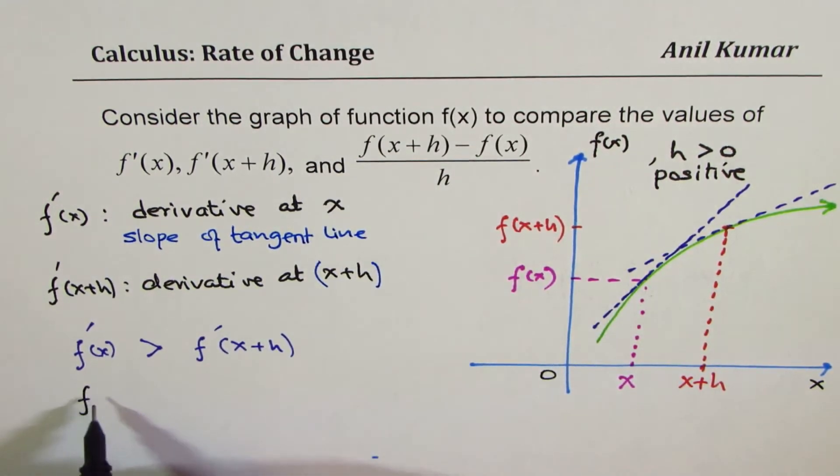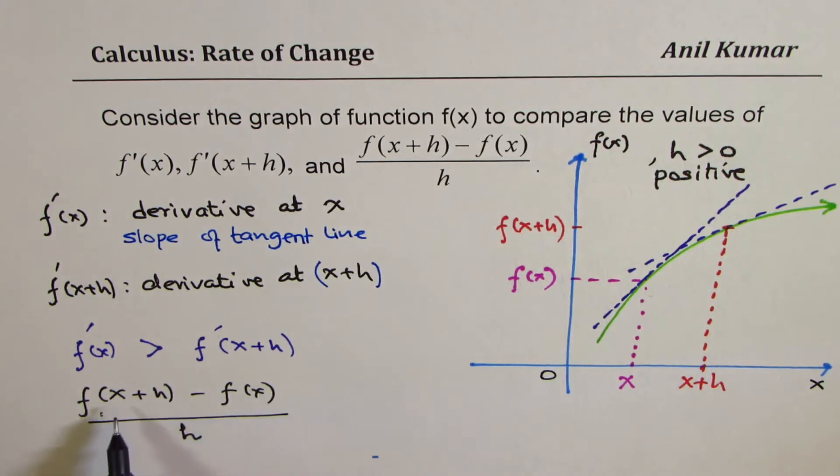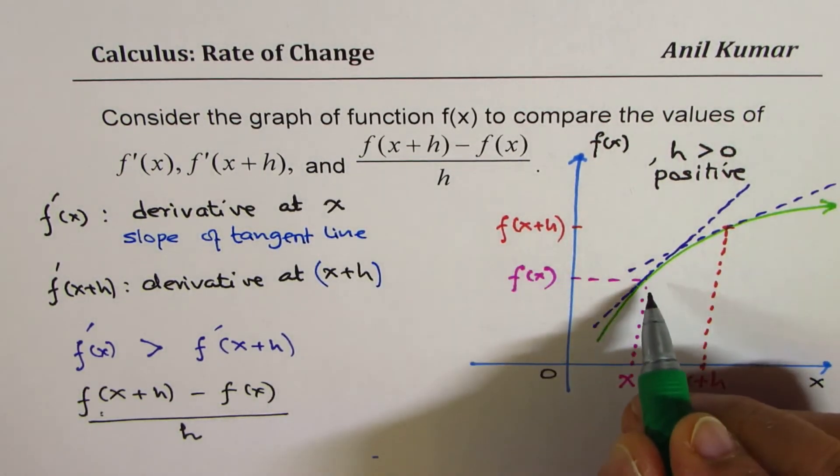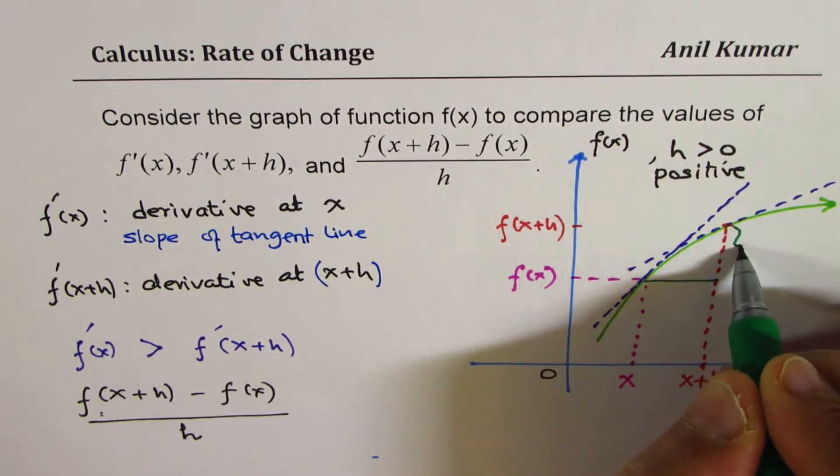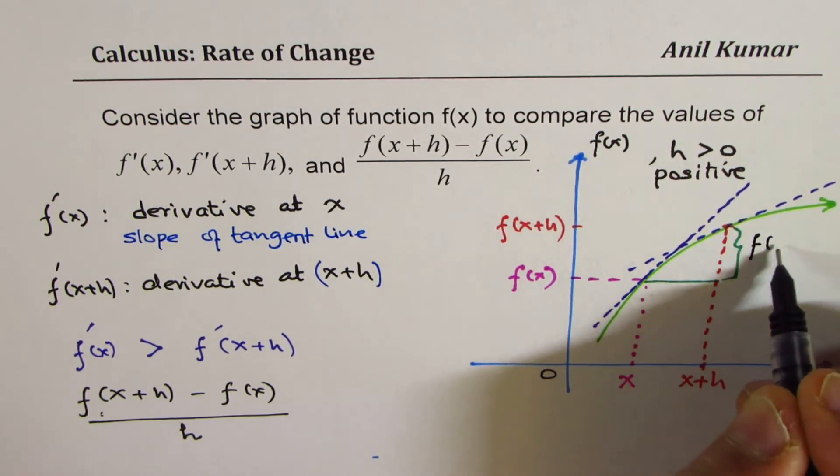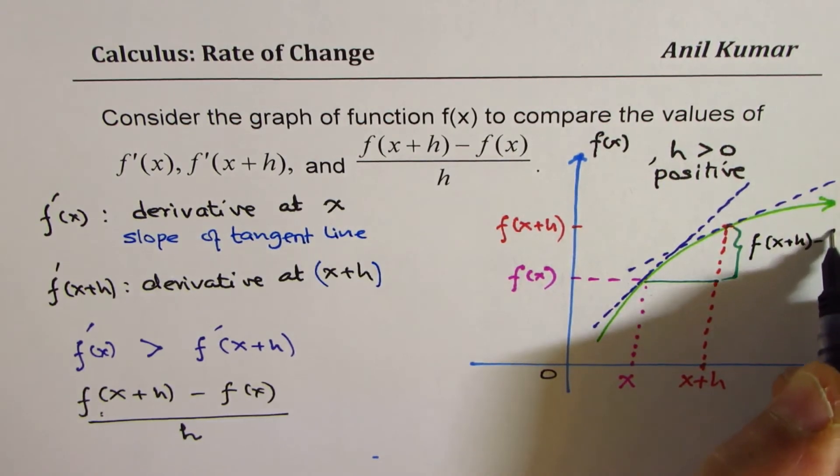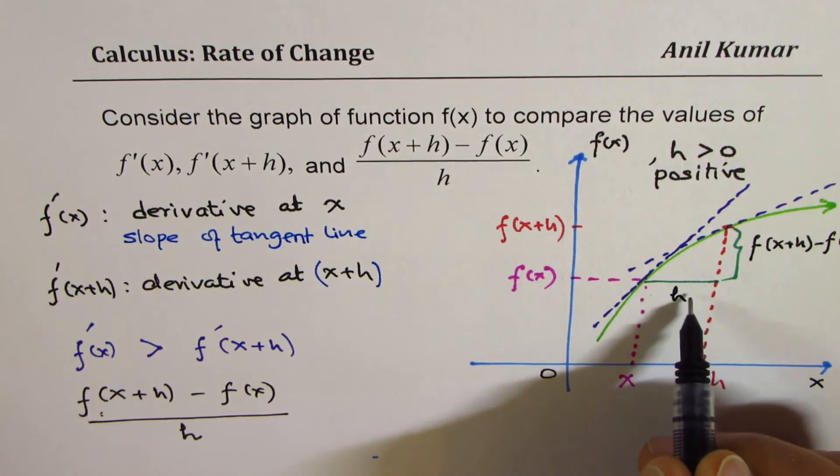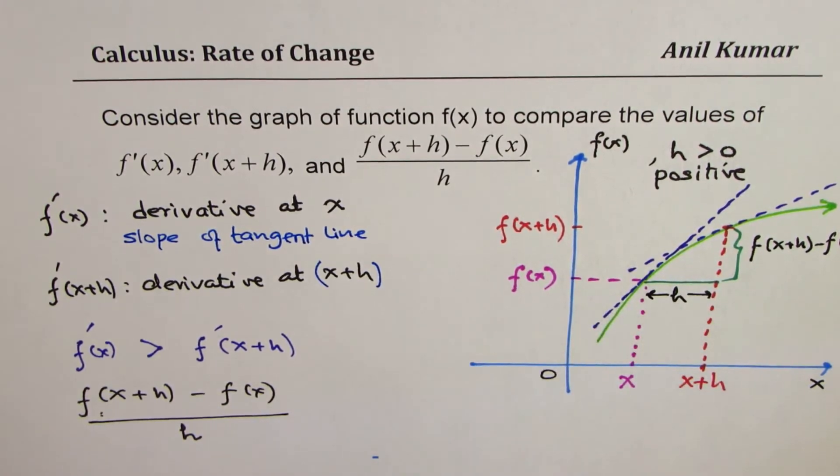Now, let us also try to understand what is this expression f(x+h) minus f(x) over h. What does that mean? This is also referred to as difference quotient. f(x+h) minus f(x) is basically rise. So difference in these two values. If I construct a triangle here by joining this portion here, which is the rise, is f(x+h) minus f(x). And as you can see, h is this distance, the horizontal distance. So that becomes slope of secant line.